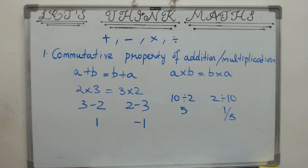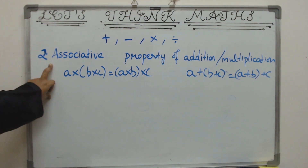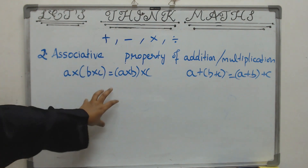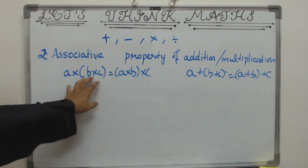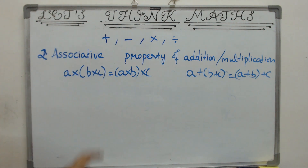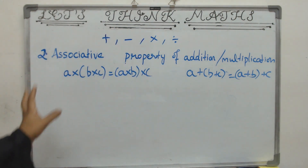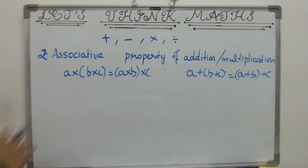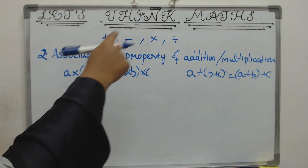This brings us to our second property known as the associative property. In the first property we dealt with just two numbers; here we are dealing with three numbers. The associative property of addition or multiplication says: if you have to multiply three numbers, you have the liberty to choose which two numbers you want to multiply first — the first two or the last two. You can choose; it is all the same, for both multiplication and addition.